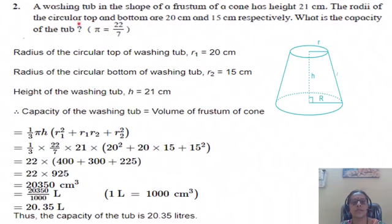Question number 2. A washing tub in the shape of a frustum of a cone has height 21 centimetre. Radius of the circular top and bottom are 20 centimetre and 15 centimetre. Find out the capacity of that tub. Pi is 22 by 7. So, write down the radius of the circular top 20 centimetre, radius of the bottom of washing tub 15 centimetre, height of the washing tub 21 centimetre. And capacity of the washing tub is same as volume of the frustum of cone.